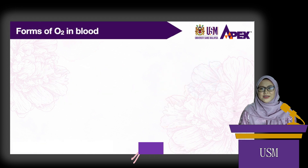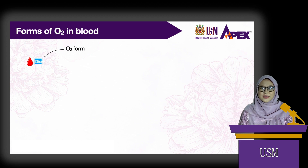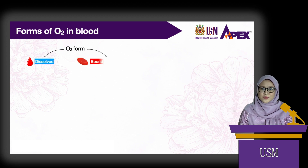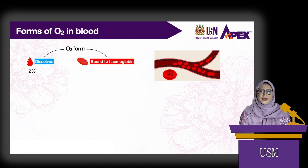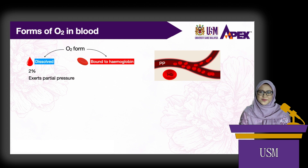In blood, oxygen is carried in two forms: dissolved and bound to hemoglobin. Dissolved oxygen accounts for only 2% of the total oxygen content in the blood. Because dissolved oxygen is free, meaning it does not bind to anything, this dissolved oxygen exerts partial pressure in the blood.